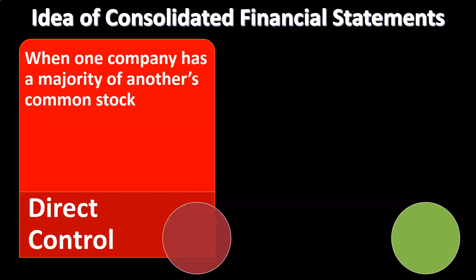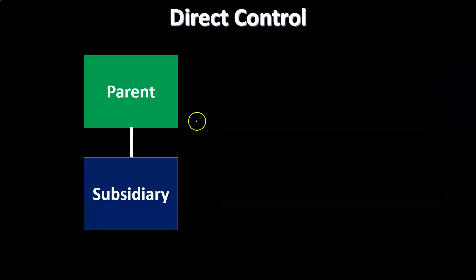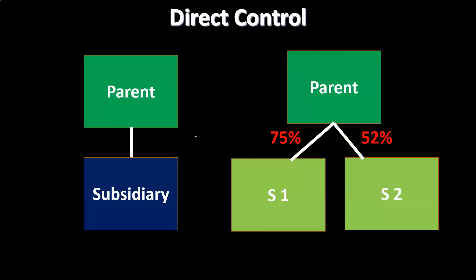Direct control is when one company has a majority of another company's common stock. In a simple A-and-B scenario, one company has the majority interest — over 51 percent — and control is easy to see. In that case you have simply a parent-subsidiary type of relationship where the parent has more than 51 percent of the subsidiary's common stock.